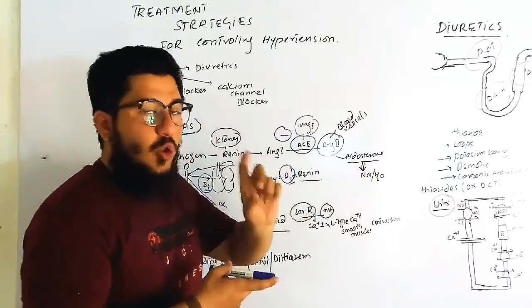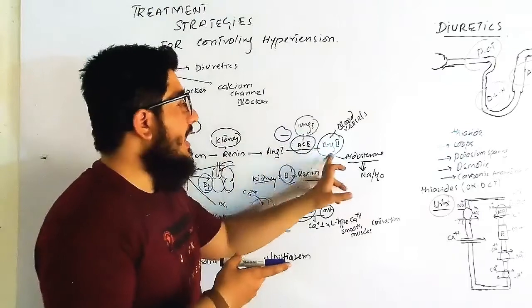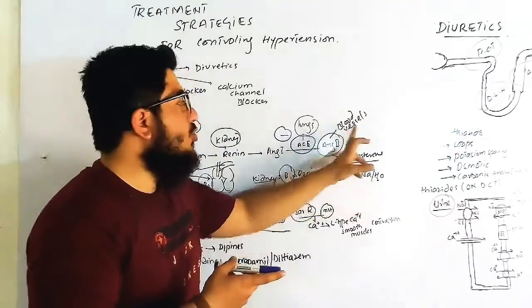This is angiotensin 2. When it is released, it has two important functions: to release aldosterone and to constrict blood vessels.